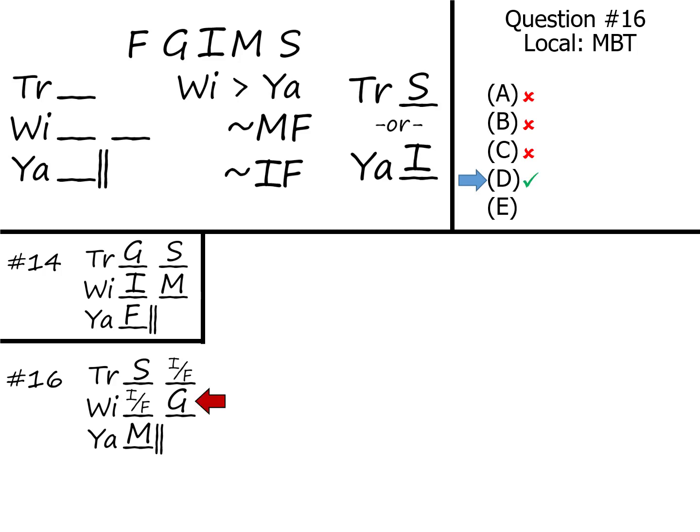That's something we wrote definitely into our sketch. And E, that's about the Williamses having the I, which doesn't have to be true. So our answer is answer choice D.